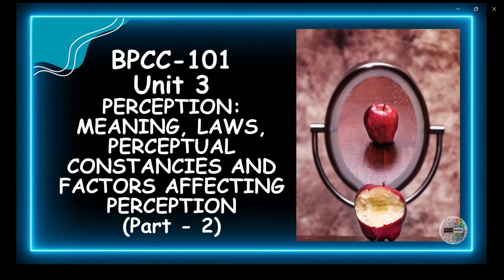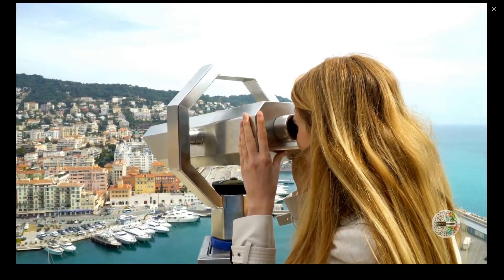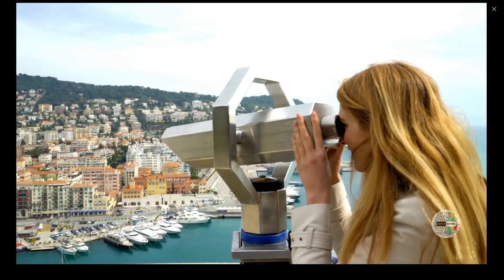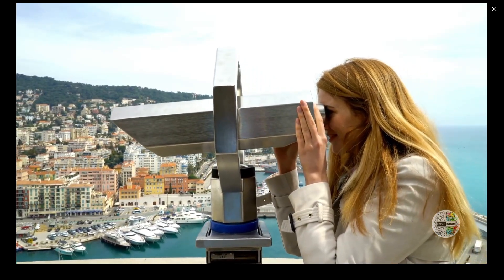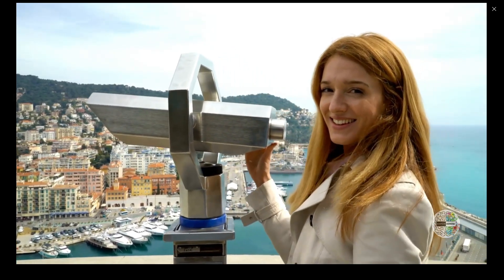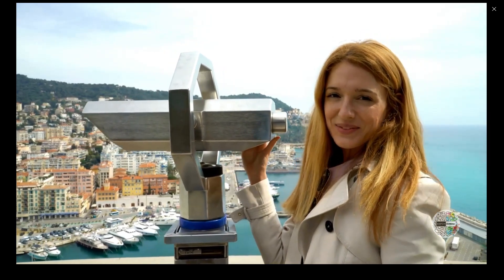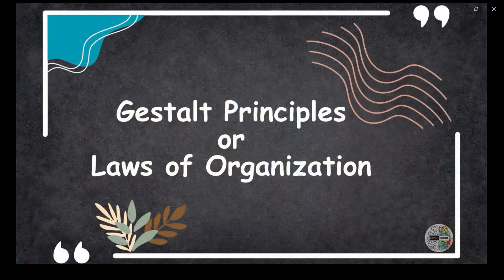In our complex world there's an underlying order that we often overlook. These are the laws of organization, more commonly known as the Gestalt principles, and they shape how we perceive and make sense of the world around us. The Gestalt principles are a set of fundamental principles in psychology that describe how humans perceive and make sense of visual information. These principles explain how our brains naturally organize and interpret complex scenes or patterns into meaningful and coherent perceptions.